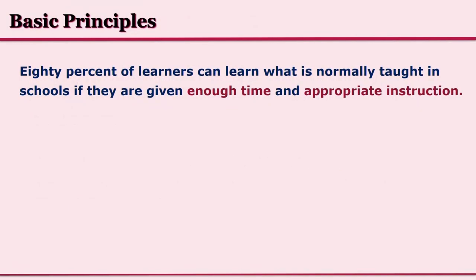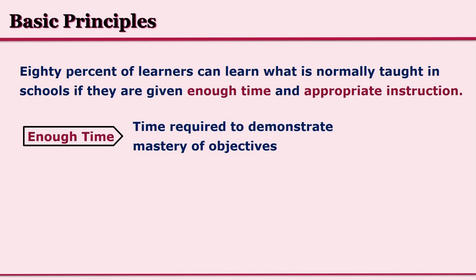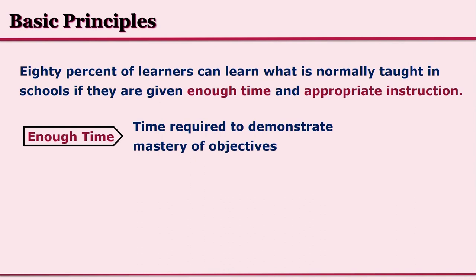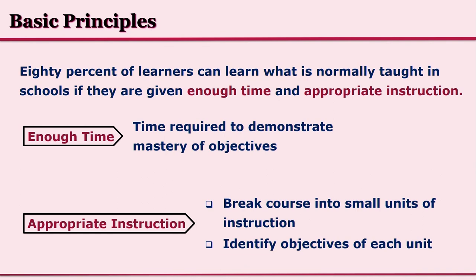80% of learners can learn what is normally taught in schools if they are given enough time and appropriate instruction. Enough time means the time required to demonstrate mastery of objectives, and this time will vary per student. The second concern is appropriate instruction: the course should be provided in many small units and chunks, and the instructor must identify objectives for every unit.